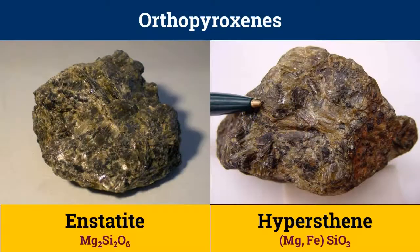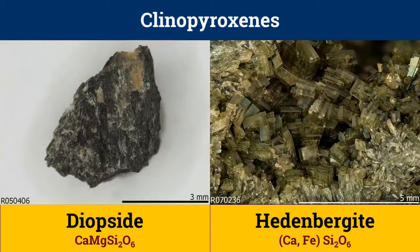Enstatite, or Mg2Si2O6, is an orthopyroxene, and so is hypersthene, which is represented as (Mg,Fe)SiO3. Examples of clinopyroxenes include diopside and hedenbergite, where diopside is mainly formed by the metamorphism of siliceous dolomites in layered igneous intrusions.